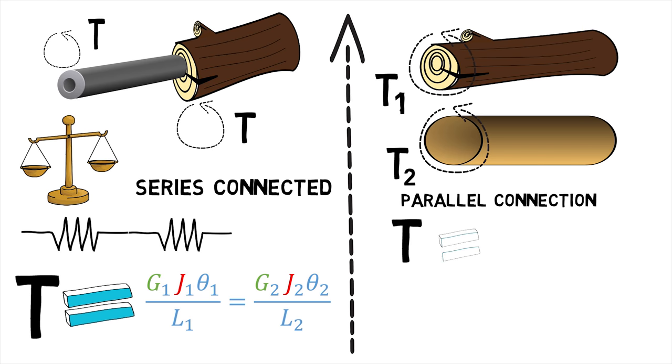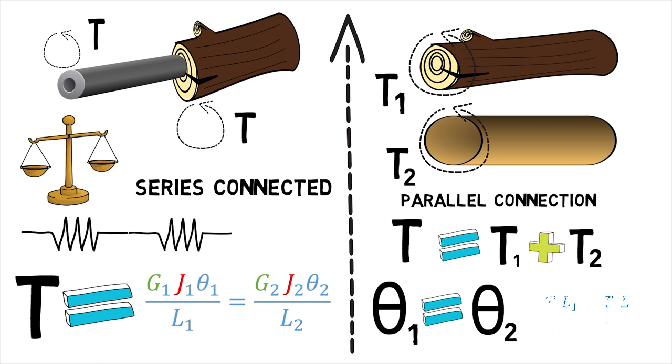For parallel connection, torque T equals T1 plus T2, and the angle of twist for each portion are equal and can be obtained from T1L1 upon G1J1 equals T2L2 upon G2J2, where G and J are shear modulus and polar moment of inertia respectively.